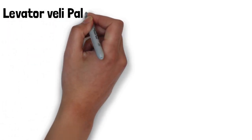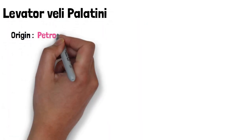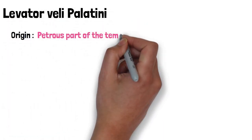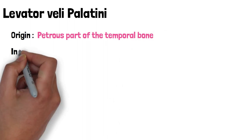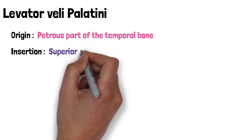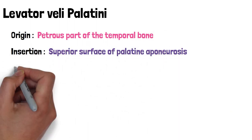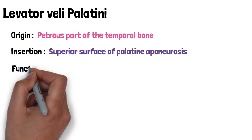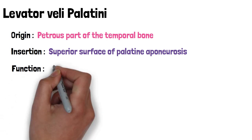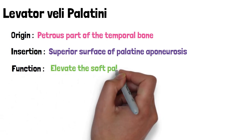Levator veli palatini originates from the petrous part of the temporal bone and inserts into the superior surface of the palatine aponeurosis. It functions as the only muscle to elevate the soft palate above the neutral position.